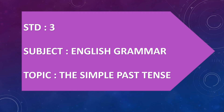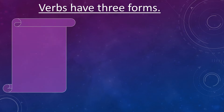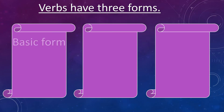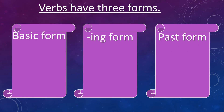Standard 3 subject English grammar topic: the simple present tense. Words have three forms. They are basic form, ing form, and past form. Now let us see some examples of all three forms.